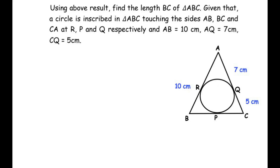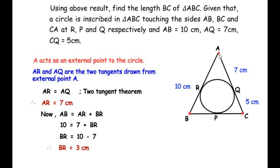Looking at the figure carefully, A is an external point to the circle with two tangents AR and AQ. B is an external point with tangents BR and BP, and C is the third external point with tangents CP and CQ. For external point A: AR and AQ are the two tangents, so length AR equals length AQ by the two tangent theorem, giving AR equals 7 cm. Now AB equals AR plus BR, so 10 equals 7 plus BR, giving BR equals 3 cm.